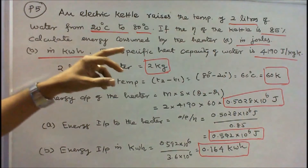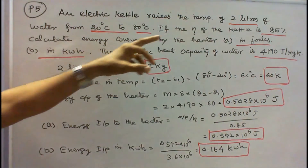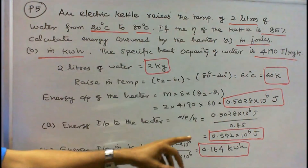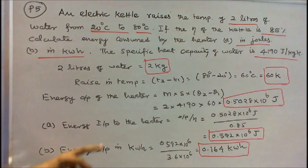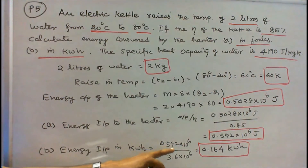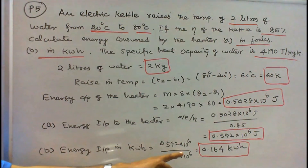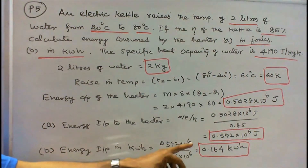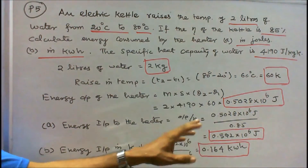The energy consumed in joules is 0.592 × 10⁶ joules. Converting to kilowatt hours: input energy = 0.592 × 10⁶ divided by 3.6 × 10⁶ = 0.164 kilowatt hours.